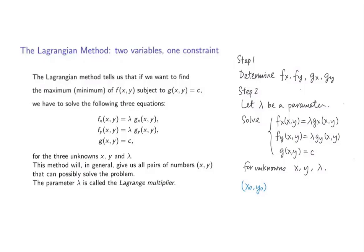Therefore, by solving this system of equations, we can get potential points which may be maximum or minimum locations of our optimization problem. The parameter lambda is called the Lagrange multiplier.